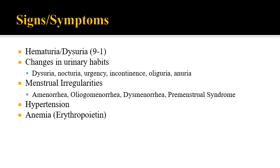Anemia is another concern. Erythropoietin is a hormone secreted by the kidneys to regulate red blood cell production, so if a kidney pathology affects production of that hormone, it could reduce red blood cells. Nipple discharge is also relevant when examining the reproductive system — serous, sanguinous (bloody), or serosanguinous discharge can be associated with breast cancer, but more benign conditions, gland infections, or hormonal imbalances can also cause it.